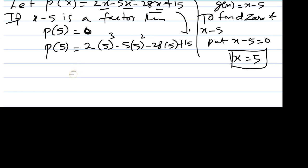2 times 5 cubed is 125, and 5 times 5 squared is 25, and 28 times 5, that's 5 times 8 is 40, so 5 times 20 is 100, plus 4 more... 28 times 5 equals 140.